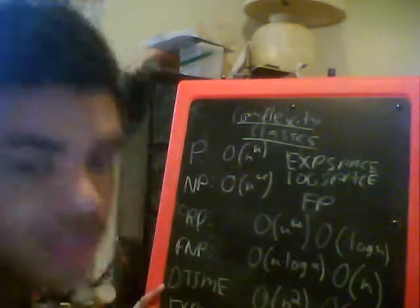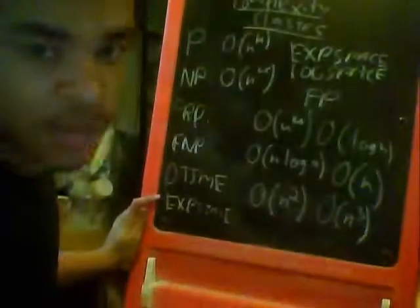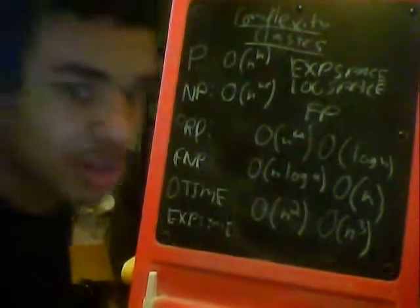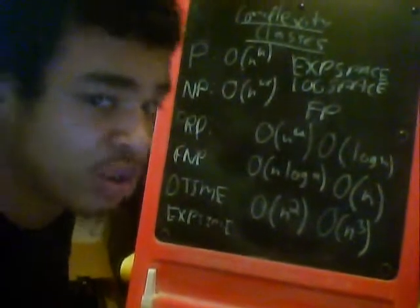And then there's B time, deterministic time, but also exponential time, which is like it takes a very long time to solve. Like basically the function, the algorithm you have is very weak and very slow.